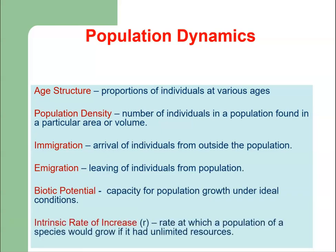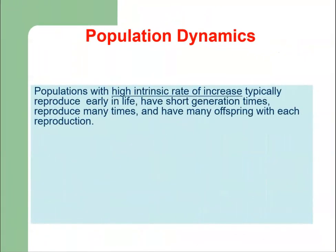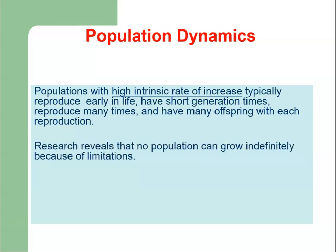There is biotic potential, which is the capacity of a population to grow under ideal conditions. We also have the concept of intrinsic rate of increase, which is the rate at which a population of a species would grow if it had unlimited resources. Populations with a high intrinsic rate of increase typically reproduce early in life, have short generation times, reproduce many times, and have many offspring with each reproduction.